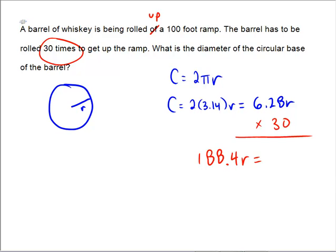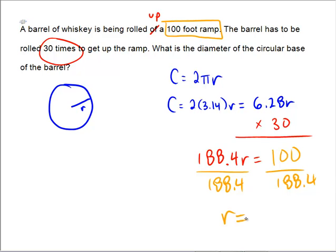And according to our problem, that's the 100 foot ramp. I almost erased that there. So, it's the 100 foot ramp. So, that must mean that this equals 100. So, if we take both sides of this equation and divide by 188.4, we can see that we're getting that r must be equal to 100 divided by 188.4. And we get that r equals .53.